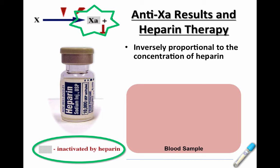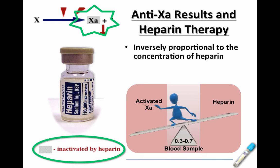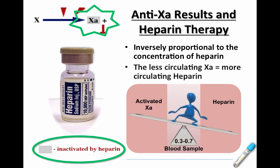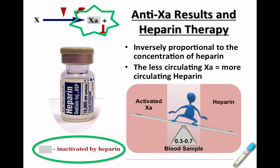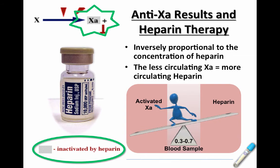In the blood sample, we've got activated factor Xa and heparin. The therapeutic range for the anti-Xa lab is 0.3 to 0.7. If there is less circulating factor Xa in the blood, then there's more circulating heparin, and vice versa.